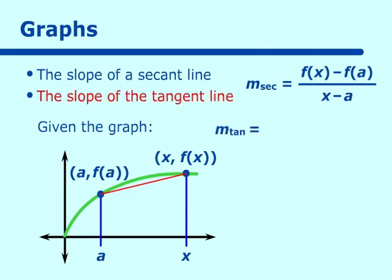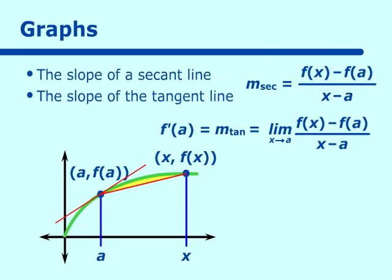If we want the slope of the tangent line, m-tan, we have to make x get closer and closer to a. This would be the slope of the secant line, and as we draw in closer and closer to a, we get the slope of the tangent line. So we use a limiting value: the limit as x approaches a of f(x) minus f(a) over x minus a. This is one way to represent algebraically the slope of the tangent line, and since the slope of the tangent line is the derivative, this equals f prime at point a.